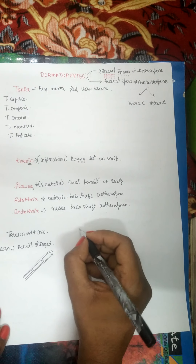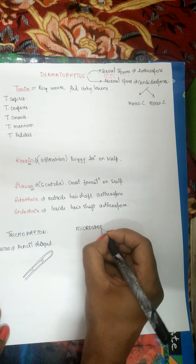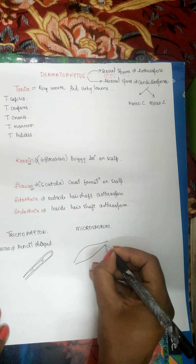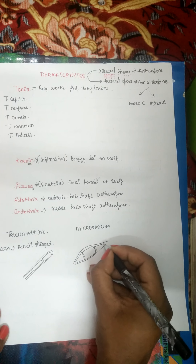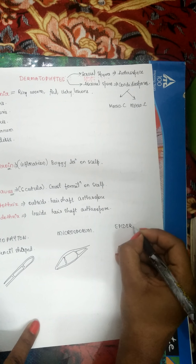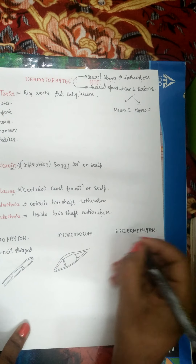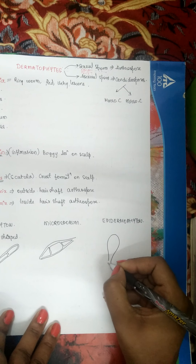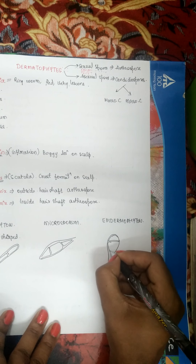Microsporum macroconidia are spindle-shaped and septate. Epidermophyton macroconidia are spear-shaped or club-shaped, and they are also septate.